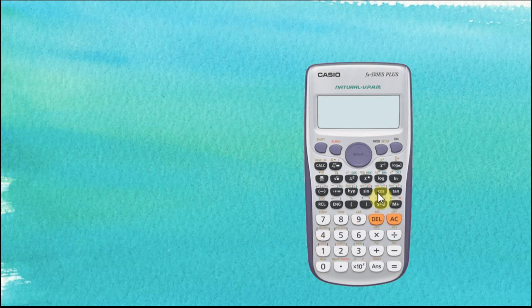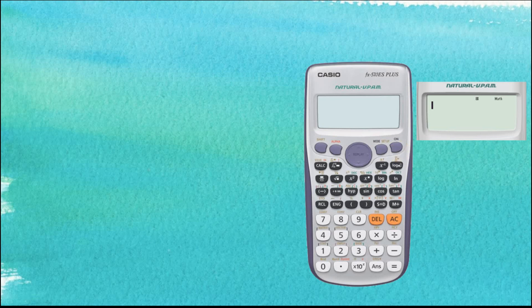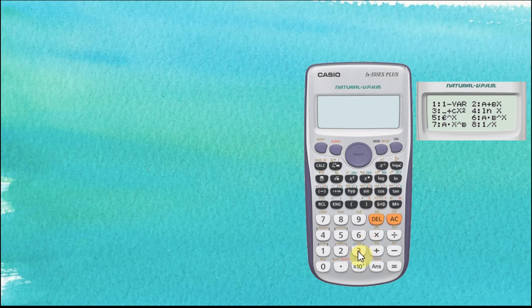Let's switch on the calculator first. In order to use normal distributions, we need to go to the statistics mode. So let's go to Mode, then Statistics, number 3. We have a few options here and we need to choose number 1.